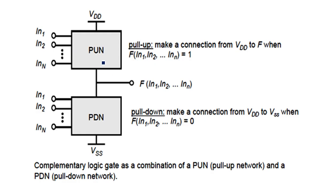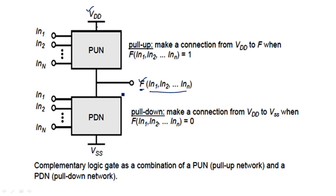In terms of the circuit diagram, the pull-up network is connected between VDD and the output, where the output is indicated by F — a function of all the inputs. The pull-down network is connected between the output and VSS (ground). N inputs are there; the output is a function of those N inputs.